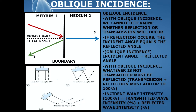We'll talk in a later segment about reflection and transmission with perpendicular incidence. With oblique incidence, if reflection does occur, the incident angle — the angle at which the sound wave approaches and strikes that boundary — is going to equal the reflected angle, which is the angle between the reflected sound wave or echo and the boundary. So just remember: with oblique incidence, the incident angle equals the reflected angle.